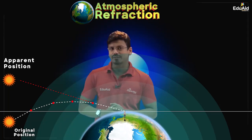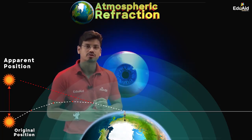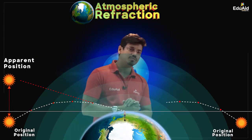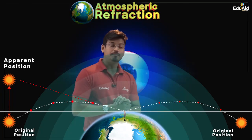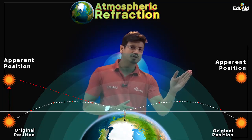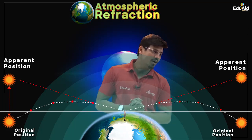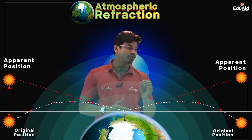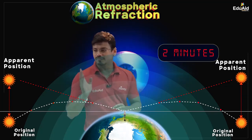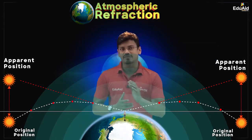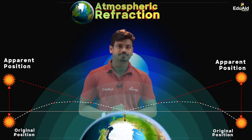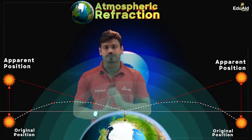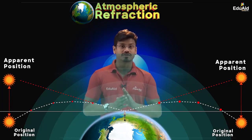The time difference between the apparent position of the sun and the original position of the sun is approximately two minutes. Similarly, at the time of sunset, the sun has already moved below the horizon, but for the observer, the apparent position of the sun is still visible above the horizon. Here also, the time difference is approximately two minutes. So sunrise is advanced and sunset is delayed because of atmospheric refraction of sunlight. In our upcoming session, we are going to discuss about scattering of light. Thank you.